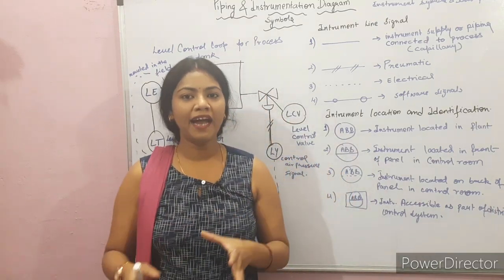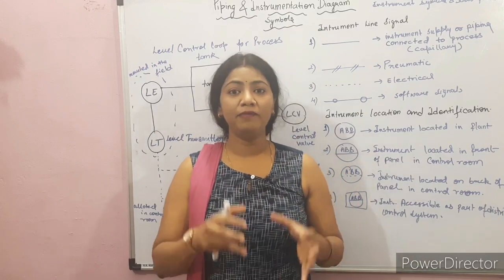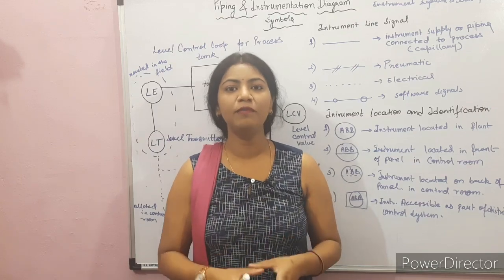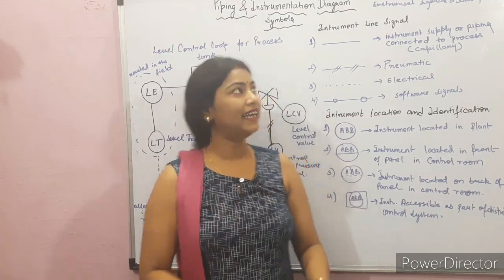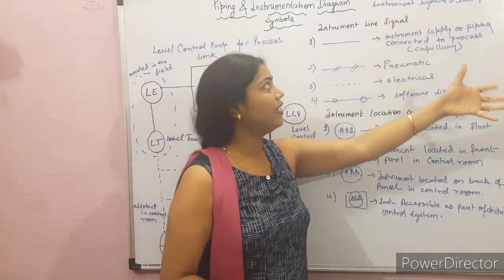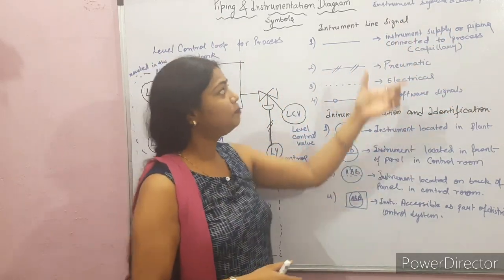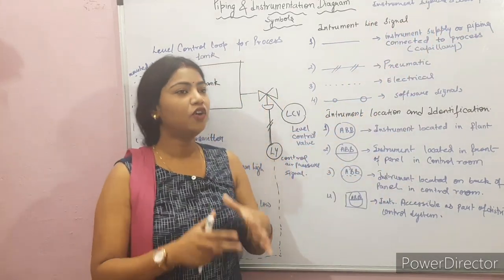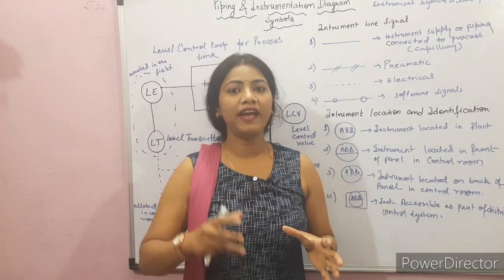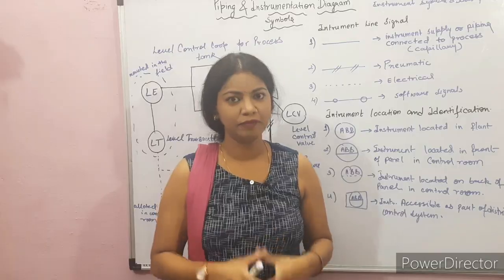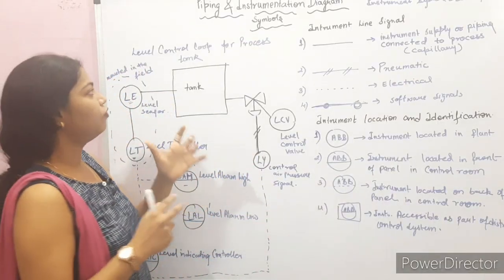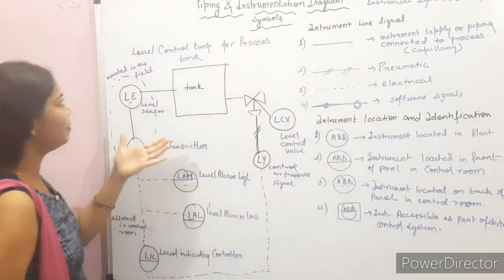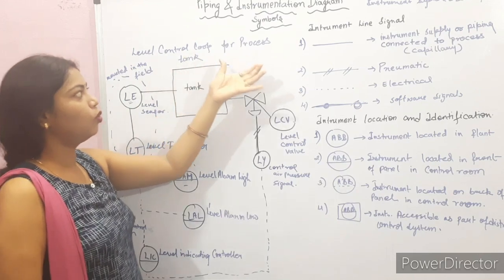Piping and Instrumentation Diagram symbols are used in the chemical process industries for the documentation of the control system and their processes. The Instrumentation Society of America established a standard document — instrument symbol and identification — for the uniform establishment of every symbol of the sensor and control system. Now I am going to show you an example which covers all the concepts of piping, instrumentation, diagram and symbol. This example is about the level control loop of a process tank.